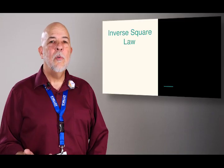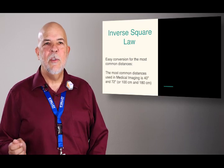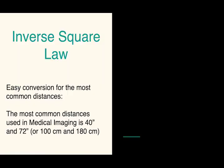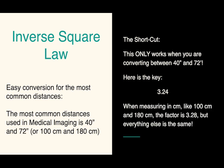So what we're also going to do now is we're going to give a formula for these most common distance changes. For us in the United States, it's 40 inches and 72 inches. Pretty much every place else, it's 100 centimeters and 180 centimeters. So the shortcut, this only works for 40 and 72 inches. So keep that in mind. Don't try to use it the rest of the time. The key is 3.24. So this does work at 100 and 180 centimeters, but the factor is 3.28. Other than that, everything else is exactly the same.